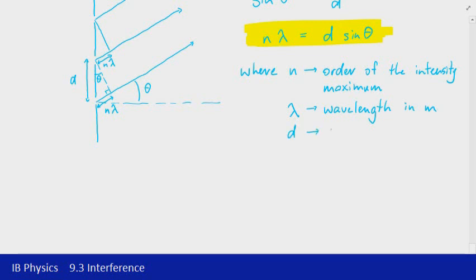d is the slit spacing, or the slit separation, and that's in meters as well. And then θ is the angle to the intensity maximum. That will usually be measured in degrees, but might sometimes be stated in radians.